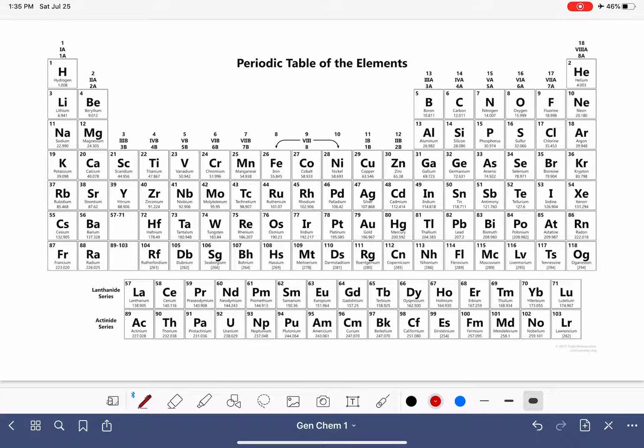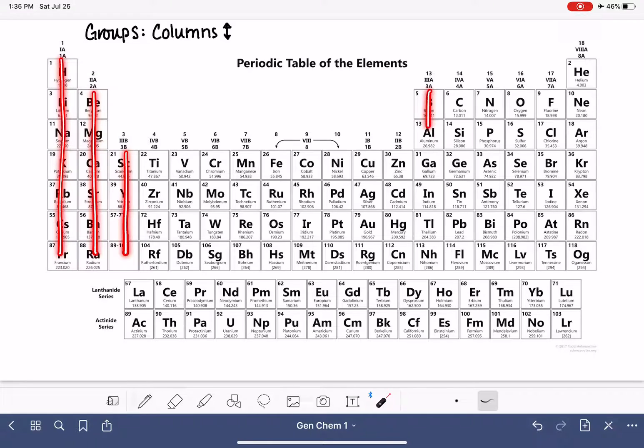The first thing that I want to bring to your attention is probably the most commonly referred to thing on the periodic table are the groups of elements. The groups are the vertical columns, which are the up and down portions of the periodic table. So this is one group. This is another group. This is another group. And you get the idea. The groups are the up and down portions.